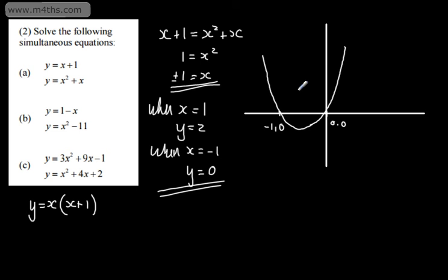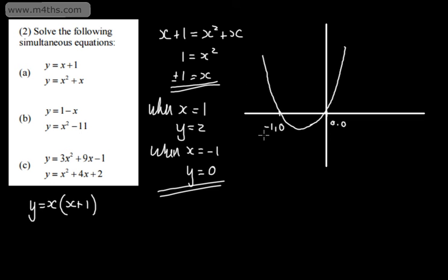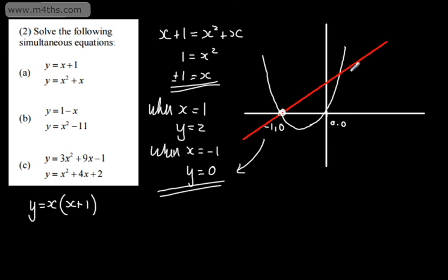Now, y equals x plus 1 is a straight line. When y equals 0, x is negative 1, and when x equals 0, y is 1. Looking at our answers, we've got the point at the origin region corresponding to the solution (negative 1, 0), and then we've got the point at (1, 2), which corresponds to our other solution. So with a linear line and a quadratic, we have a potential of two solutions.